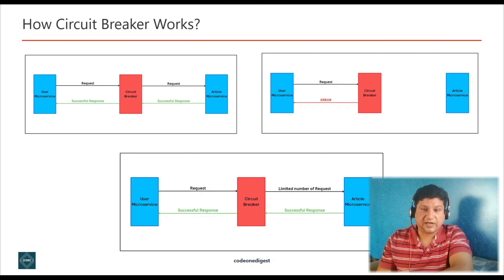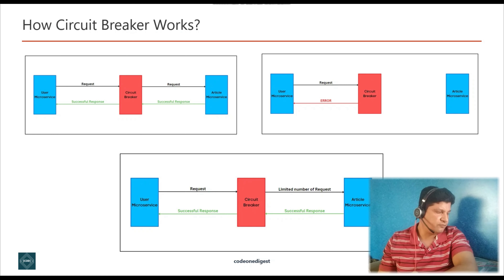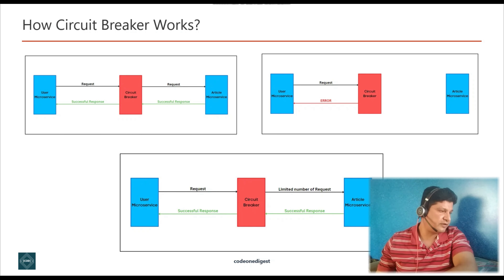Now let's understand how circuit breaker actually works. As shown in the diagram on your screen, you have a circuit breaker in between the user microservice and article microservice. If the article microservice is not reachable and is giving errors, the circuit breaker trips up and prevents any further calls to article microservice, so that user microservice is not hanging. A timer gets started at the circuit breaker. When the timer is over, the circuit breaker sends a limited number of requests to article microservice to see if it is reachable and providing a successful response. Upon receiving a successful response, the circuit breaker allows all requests to flow to article service. If circuit breaker detects any more problems with article microservice, it again trips up and prevents any further calls.